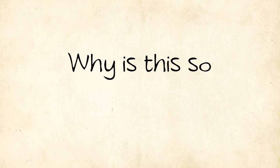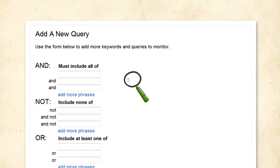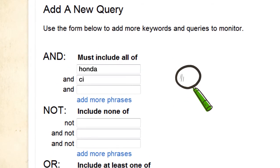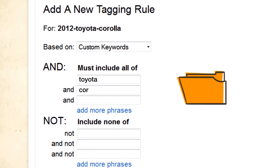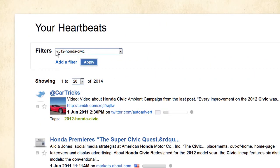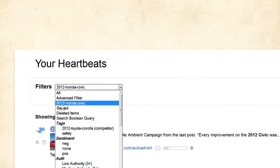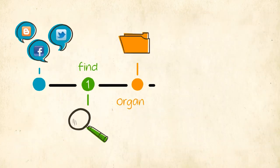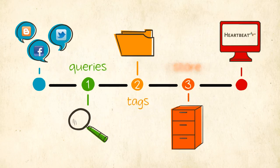So, why is this important to you? To get the results you want, you need to properly use queries and tags so that Heartbeat can find, organize, and store all of the conversations that are relevant to you. With the filters in Heartbeat, you can easily sift through all the found and organized conversations to allow for instant analysis. To summarize, queries find relevant conversations, and tags with tagging rules organize them in different categories.